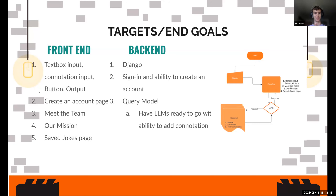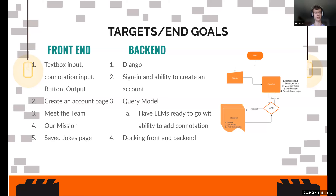Sorry for accidentally speaking over you, Bob. Our targets and end goals are basically: we wanted a text box input so you can type in any words you want and it will generate a joke for you. We also wanted people to be able to create an account so they can save their generated jokes and come back to them later — that's the create-an-account page and the save-jokes page. Lastly, we have the meet-the-team page and our mission page, just info stuff.